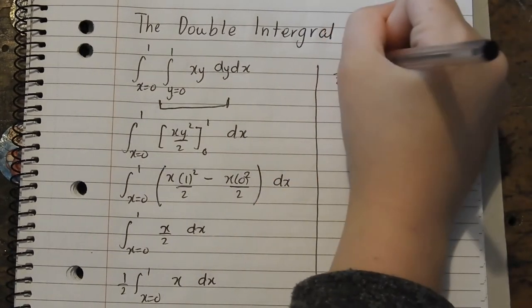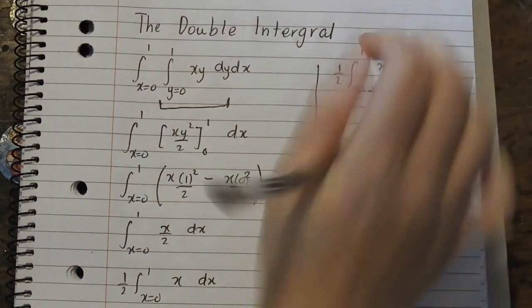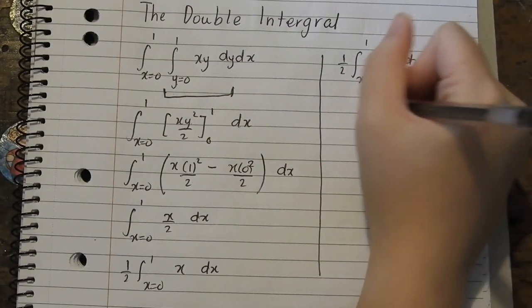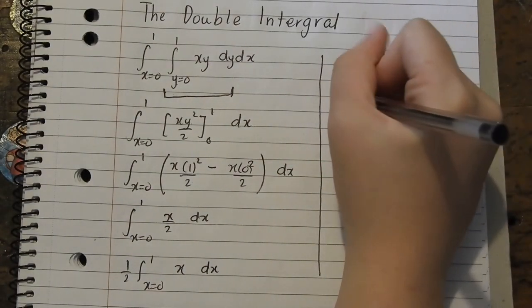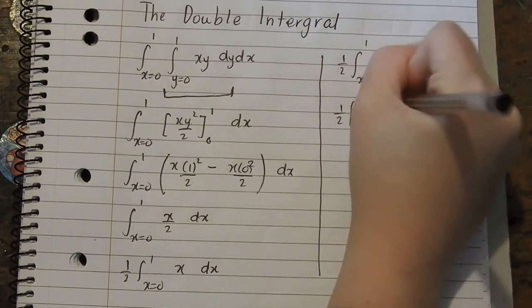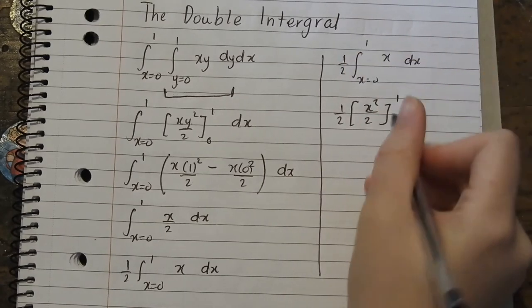So we've got, I'll rewrite it, half, x equals 0, 1, x dx. It's the same thing as what we've got. I haven't done anything yet. Alright, integration of x is x squared on 2. So it's half x squared on 2, x goes from 1, which is from 0 to 1.